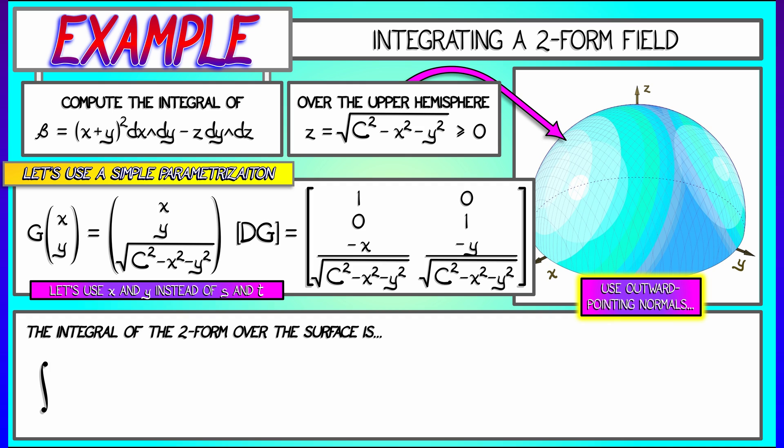Now, to integrate this two-form field beta over this surface, what do I need to do? I need to start doing some substitutions. I have the double integral with respect to dx dy of that first term, which is quantity x plus y squared times what? I take that two-form dx wedge dy, I feed it the columns of dg, and I get the determinant of the two-by-two matrix 1, 0, 0, 1. That part's really easy.